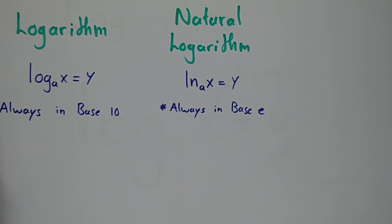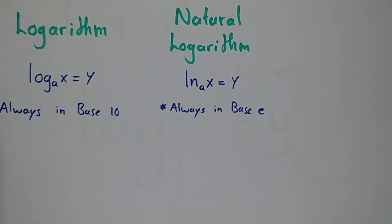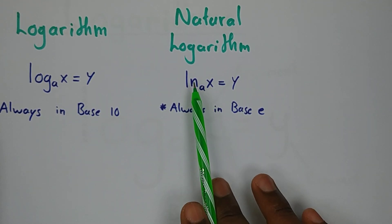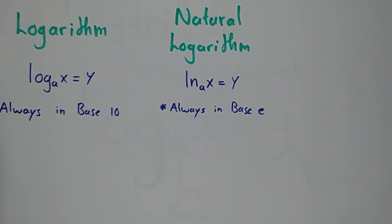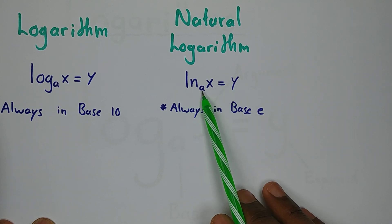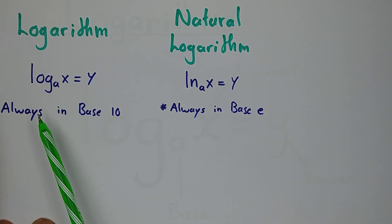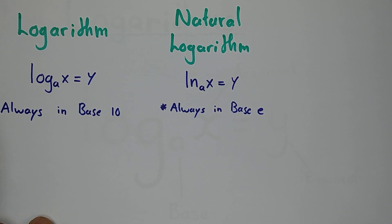We have the logarithm and the natural logarithm. On your calculator, the logarithm is written as 'log' while the natural logarithm is written as 'ln'. For both: this is the base, this is the argument, this is the exponent. If a logarithm does not have a base, it is always in base 10. When a natural log does not have a base, it is automatically in base e.